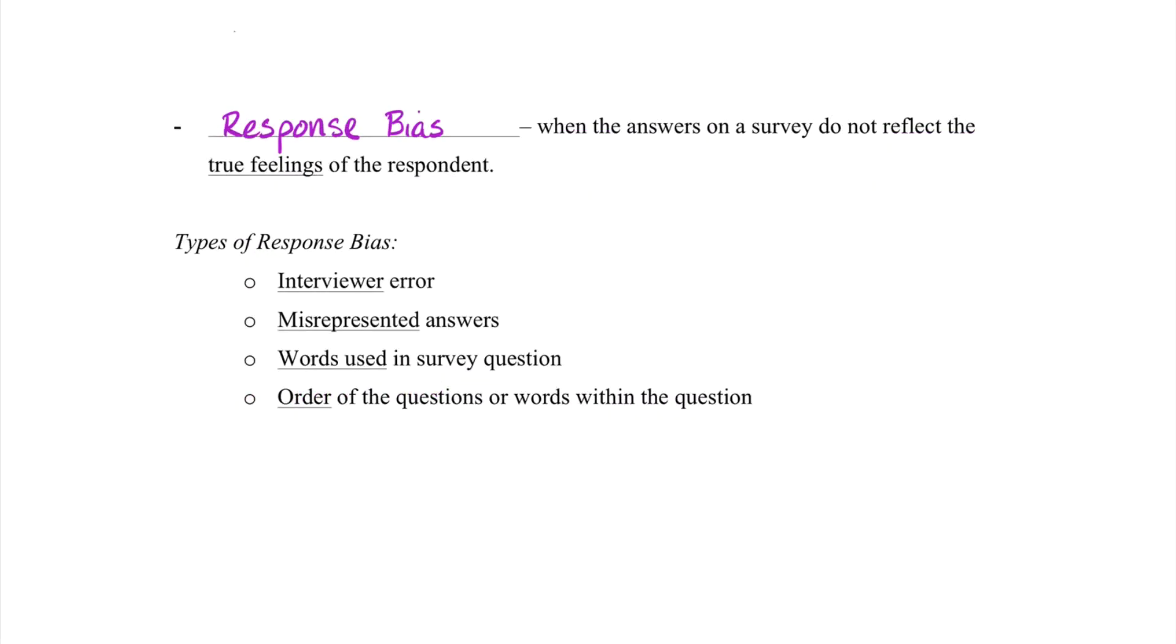Digging a bit deeper, we have a few different types of response bias. First would be interviewer error, where the interviewer himself makes some sort of mistake. This tends to throw people off a bit because they think response bias means that people are lying and it's the only option. Instead, if the interviewer makes an error, it's possible that the respondent doesn't understand a question or something along those lines, and the fault falls on the interviewer causing the response bias.